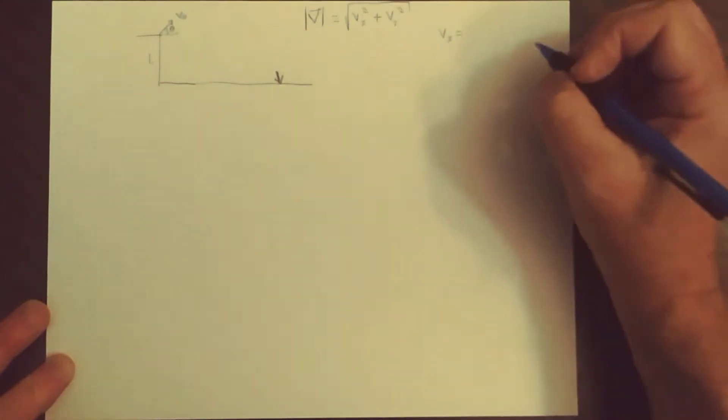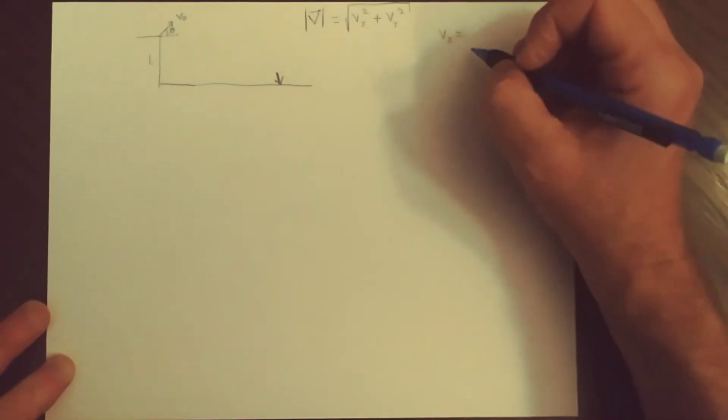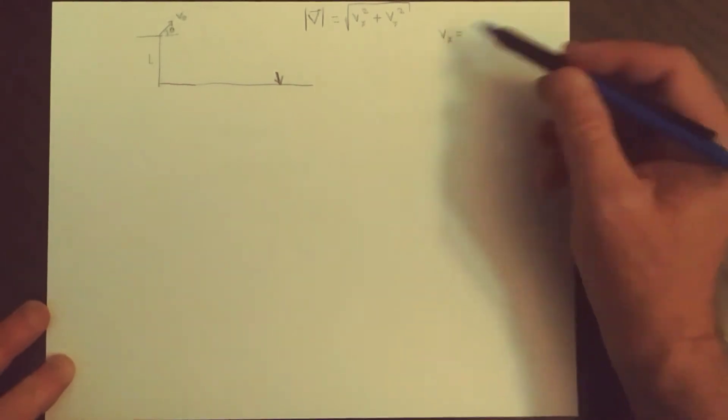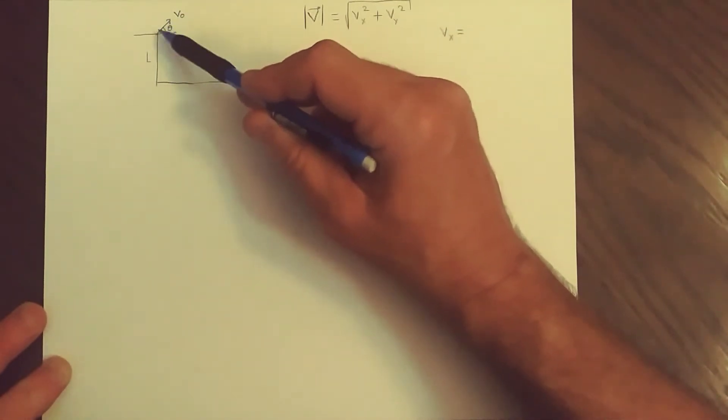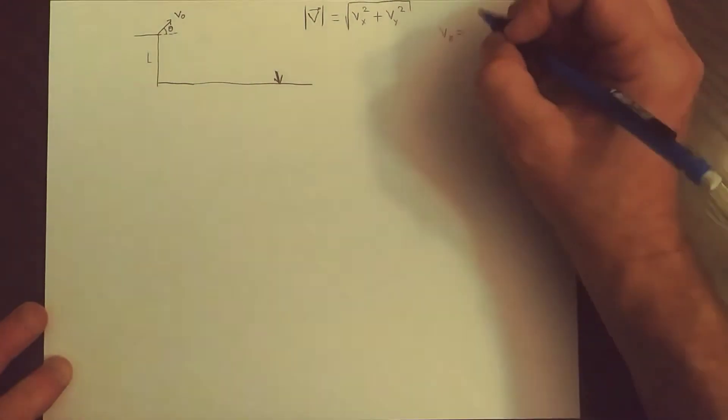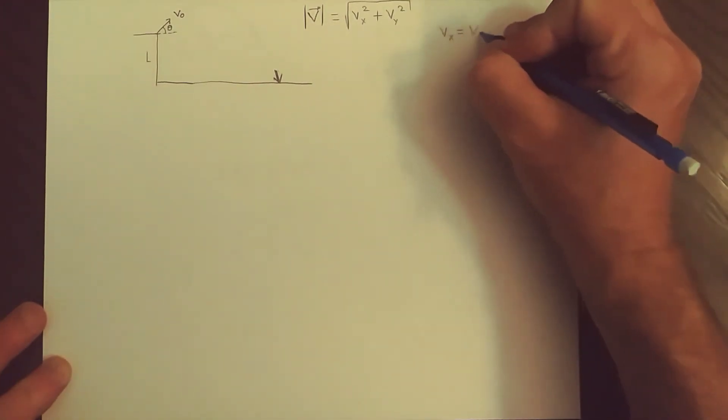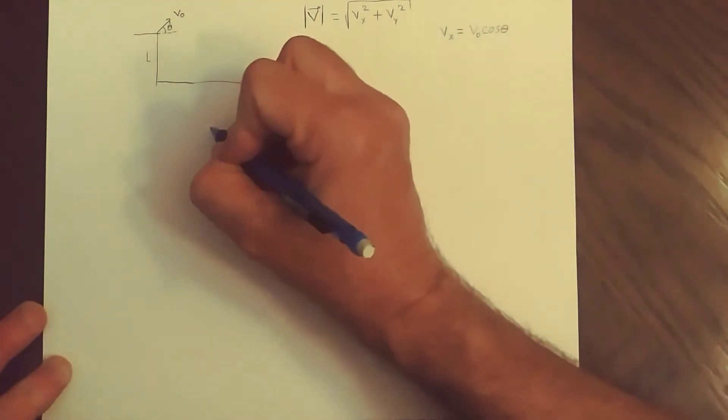Let's write the V_X equation. What does that look like? Well, the horizontal component of the velocity, so the X equations only care about the horizontal part, but the velocity is not in the horizontal, so we need the horizontal part of that, which is V naught times the cosine of the angle theta.